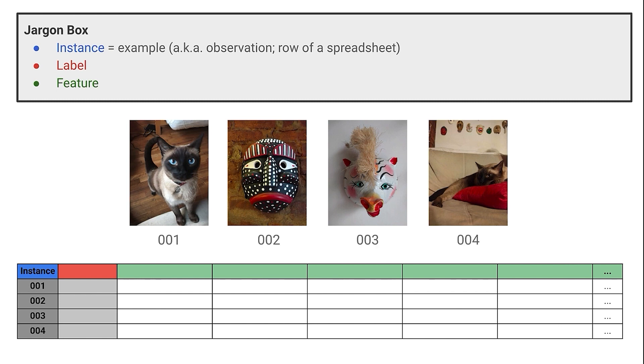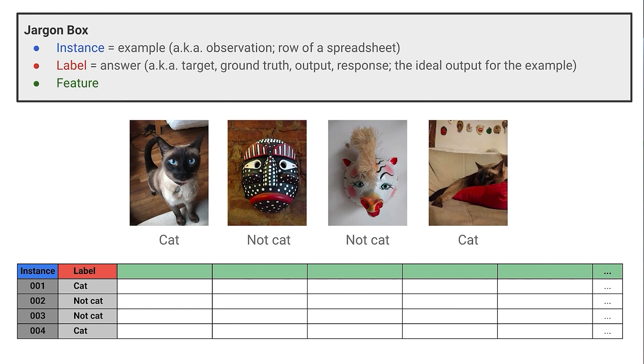For each one we have the correct label, also known as ground truth. The label is what I am going for, so you might also see that called targets. That's our correct answer.